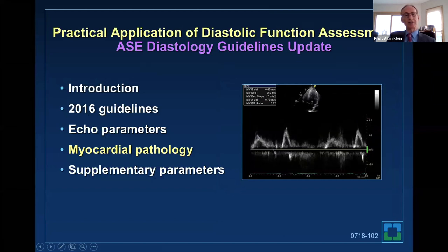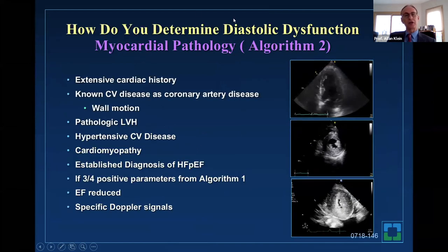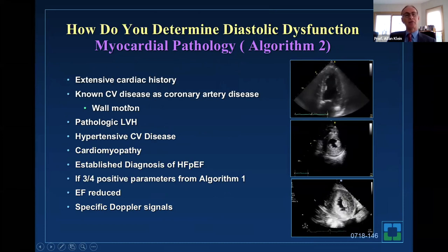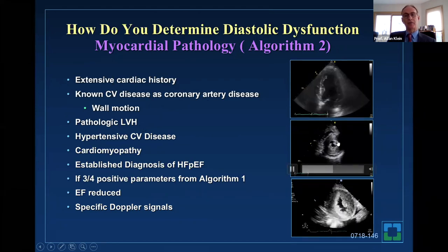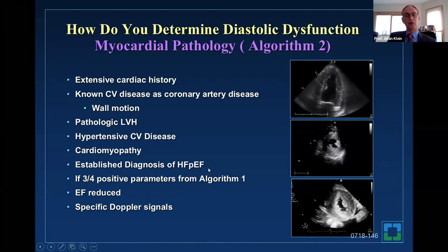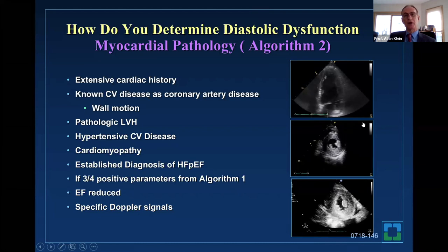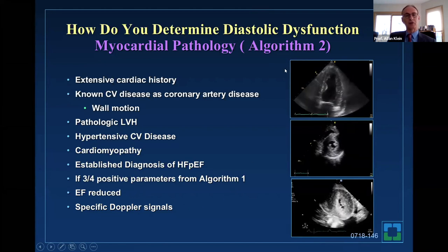One of the final things to talk about is algorithm 2. Who gets into algorithm 2? Those with myocardial pathology—someone likely to have elevated filling pressures. Myocardial pathology means extensive cardiac history: known CAD with wall motion abnormality, LVH, hypertensive heart disease, cardiomyopathy such as amyloid. Also if you already know there's HFpEF, if parameters from algorithm 1 are all positive, if the ejection fraction is reduced, or if you have an L-wave, large A-reversal, and pulmonary vein findings—these get you into algorithm 2. Most ECHO labs use this algorithm for myocardial pathology.